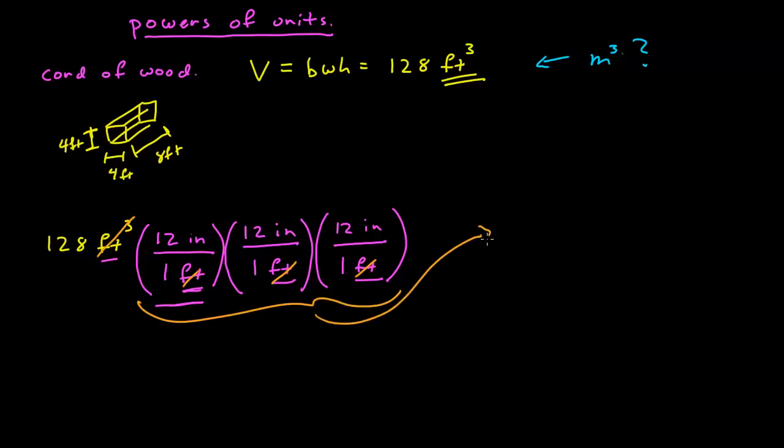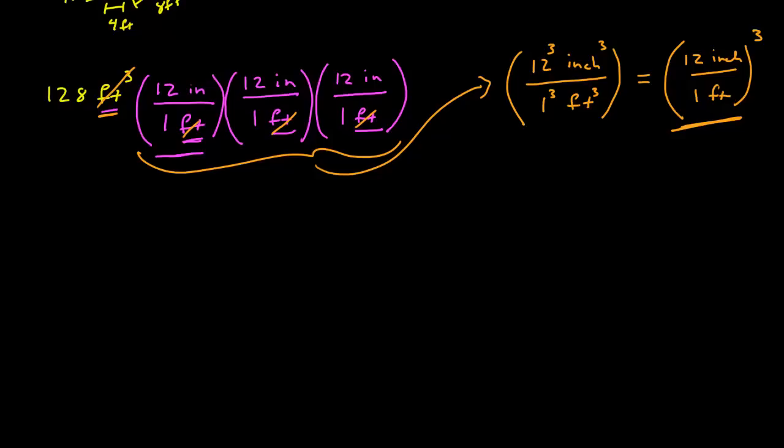So these, if I didn't want to write them all out, is equal to 12 cubed inches cubed over 1 cubed feet cubed, which, of course, is the original conversion, 1 foot quantity cubed. So when I'm dealing with powers of units, I need to multiply that term by powers of my ratios to be able to cancel the appropriate units. So